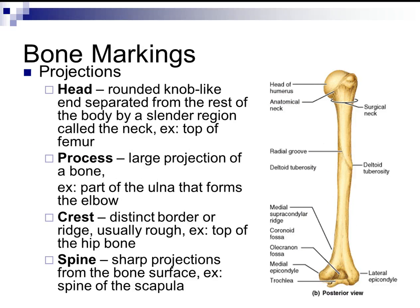Different bones have different types of markings. One category is projections. The head is a round, knob-like end separated from the rest of the bone by a slender region called the neck. For example, on the femur, the top rounded part is the head and the slender region below it is the neck of the femur.